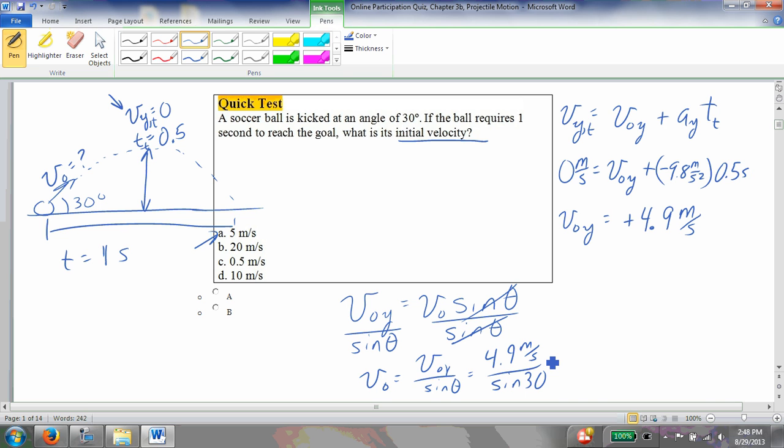The sine of 30, of course, is 0.5, so it's just going to be 9.8 meters per second. But keeping just one sig fig, as I have in this problem, the answer will be d.